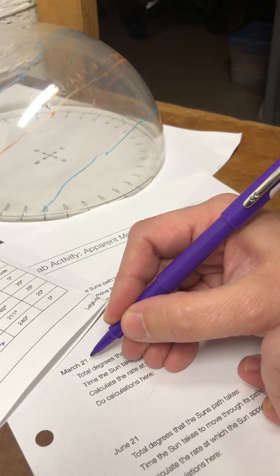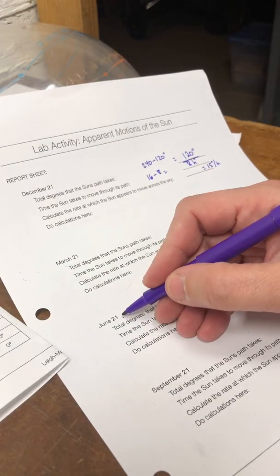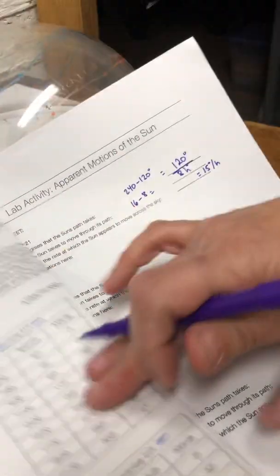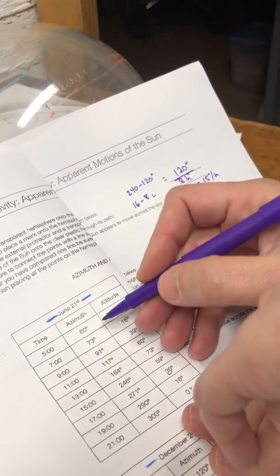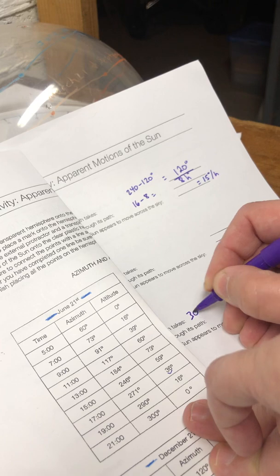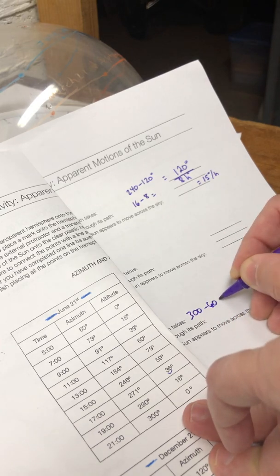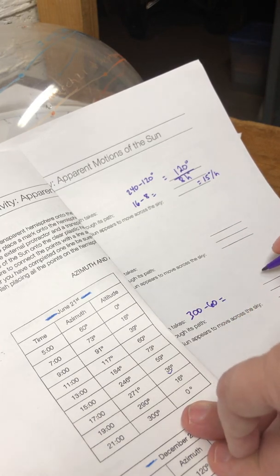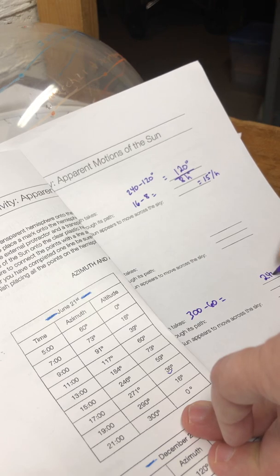I'm going to jump down to June. So June, total degrees. Here's my chart. My total degrees would be 300 minus 60. So 300 minus 60 equals 240 degrees.